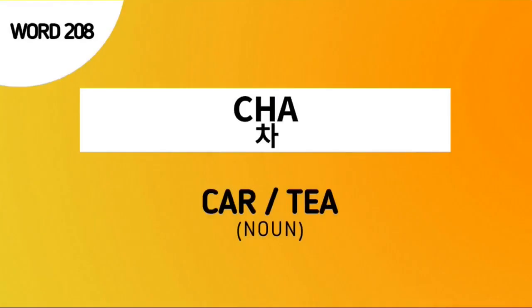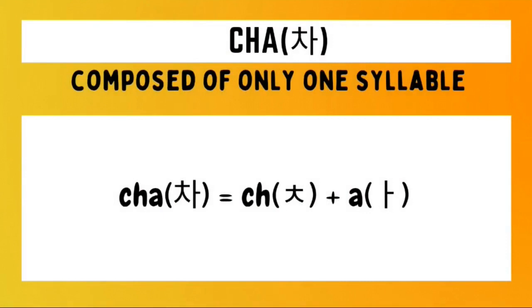Here are some of the possible meanings of cha in Korean: one is 'car' and the second one is 'tea.' How do we write cha in Hangul? It is composed of just two characters — the first character is the chiyot character and the second one is the ag character. We just combine these to form the Hangul of the word cha.